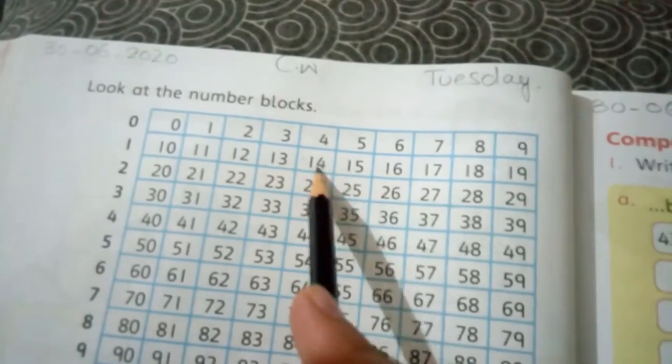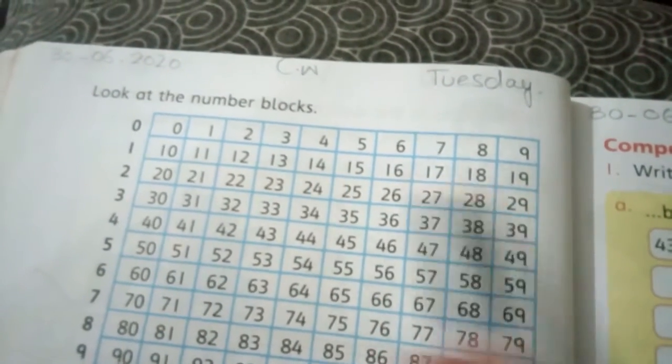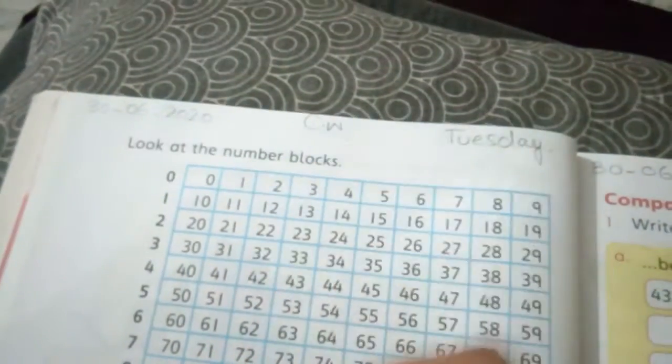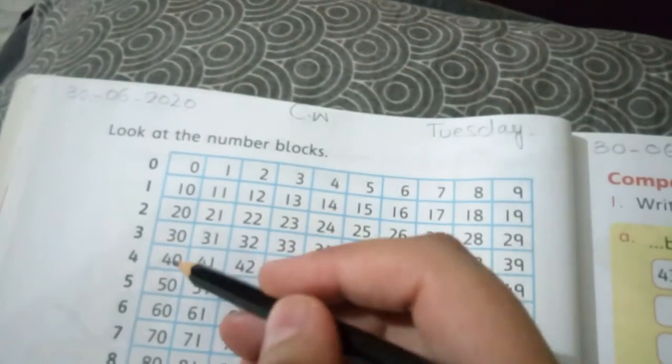10, 11, 12, 13, 14, 15, 16, 17, 18, 19. This is how we count. Or another way to count is by tens: 0, 10, 20, 30, 40, 50, 60, 70, 80, 90, 100.